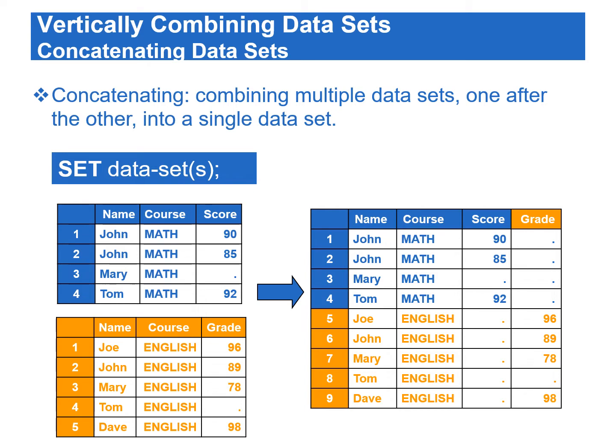If the input data sets have different variables, the observations from a given data set are set to missing for variables that only exist in other data sets. For example, if the score variable only exists in the first data set, then the observations from the second data set for the score variable will be set to missing in the combined data set.